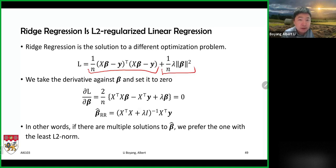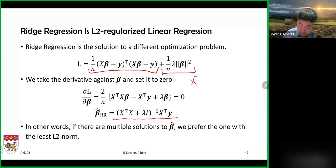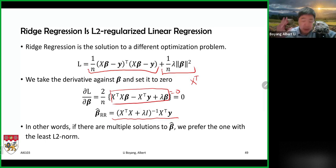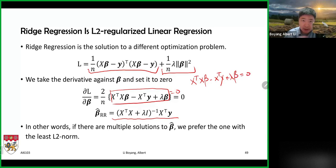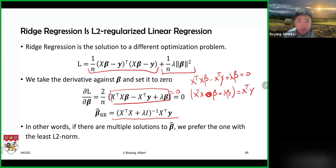Taking the derivative and setting to zero, we get: X-transpose X times beta minus X-transpose y plus lambda times beta equals zero. Moving betas to one side: X-transpose X times beta plus lambda times beta equals X-transpose y. We can't directly factor out beta because lambda is a scalar and X-transpose X is a matrix — we can't add a scalar to a matrix.